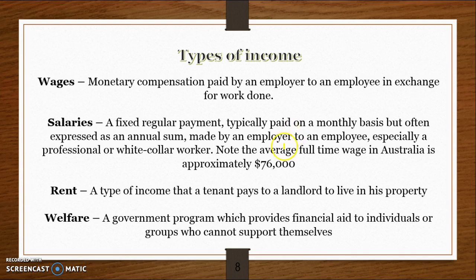Rent is a type of income that a tenant pays to a landlord to live in their property, so it would be a form of income if you're receiving rent from a tenant. Welfare is a government program that provides financial aid to individuals or groups who can't support themselves. It can come in the form of unemployment benefits, pension, youth allowance, or disability support pension.